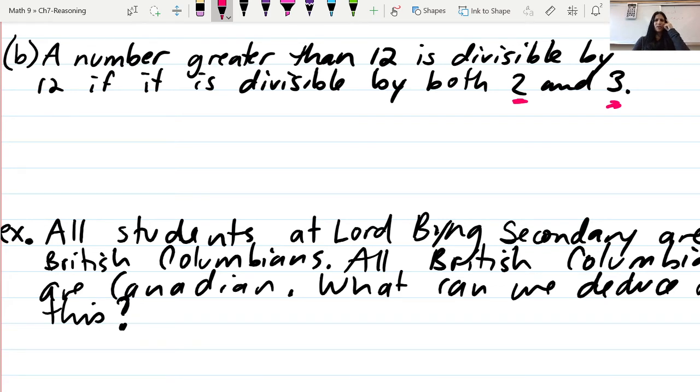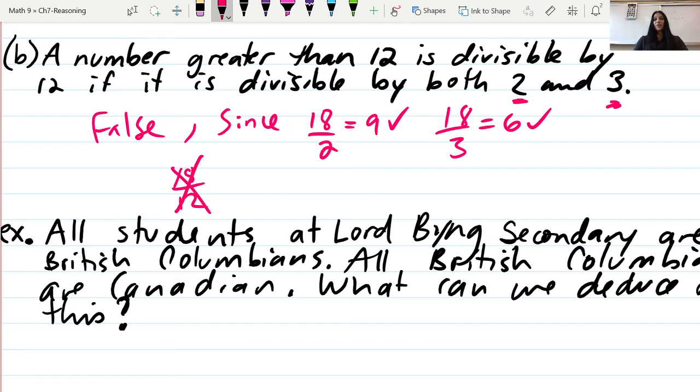I'm thinking of numbers bigger than 12 divisible by two and three. This feels like it probably isn't true. To counter this example, I need a specific value. The number I'm thinking of is 18. So I'm going to say false. My counterexample: 18 is divisible by two, giving nine, and divisible by three, giving six, but it isn't divisible by 12. So this is false, and here's my example to back up what I'm saying.